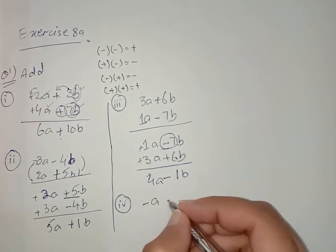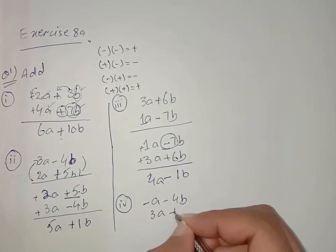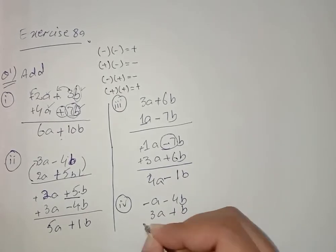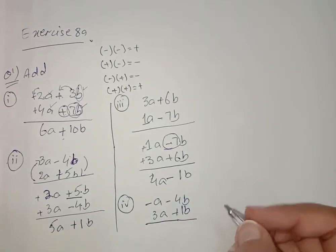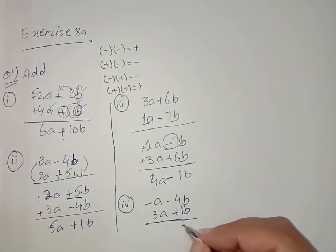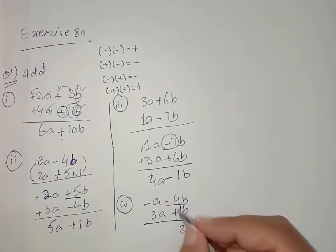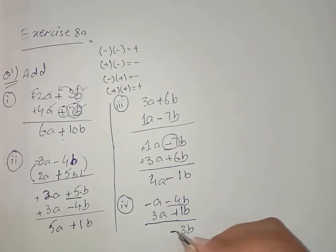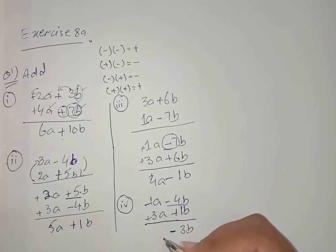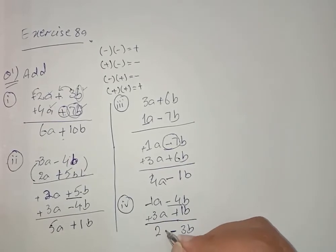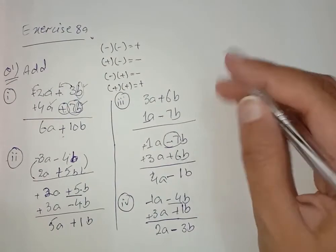Now move towards Part 4, which is minus a minus 4b and 3a plus b. Plus minus is minus, so 4 minus 1 is 3b — the sign of the bigger value is minus. Plus minus is minus: 3 minus 1 is 2a, and the sign of the bigger value is also minus. So the answer is minus 2a minus 3b.